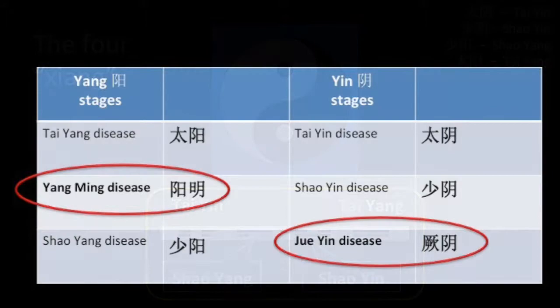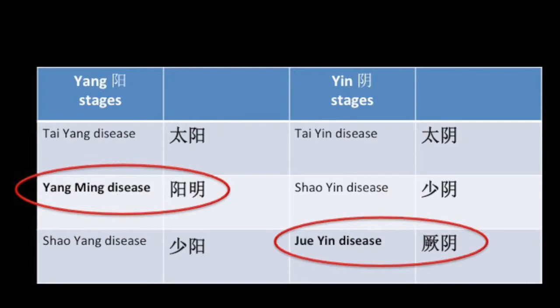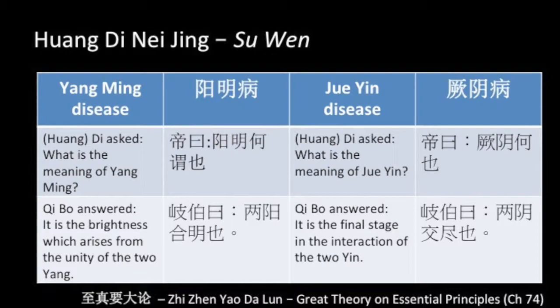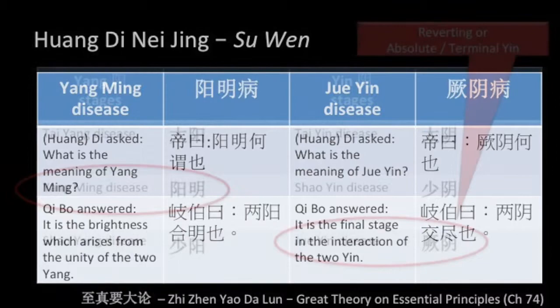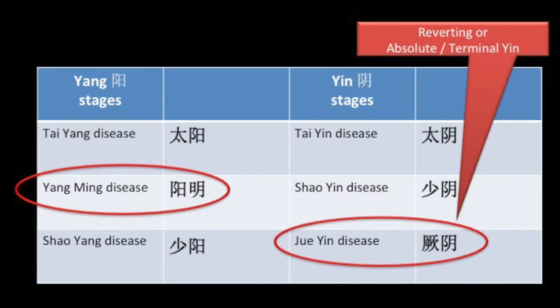Yangming translates as 'yang brightness,' and Jueyin is more difficult to translate. The Huangdi Neijing gives us an explanation of these two terms. In Chapter 74, Huangdi asks what is the meaning of Yangming, and Qi Bo answered: it is the brightness which arises from the unity of the two yang. Huangdi then asked what is the meaning of Jueyin, and Qi Bo answered: it is the final stage in the interaction of the two yin. Some texts translate Jueyin as 'reverting yin,' while others call it 'absolute or terminal yin.'